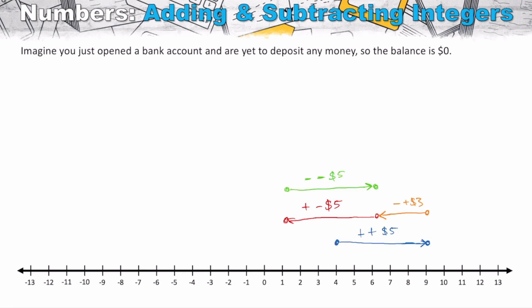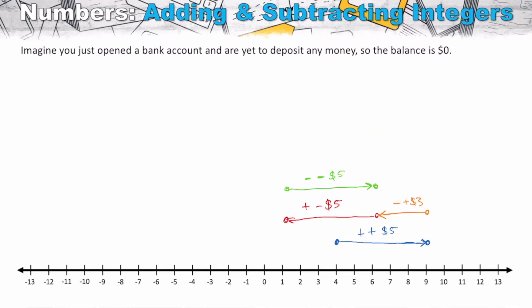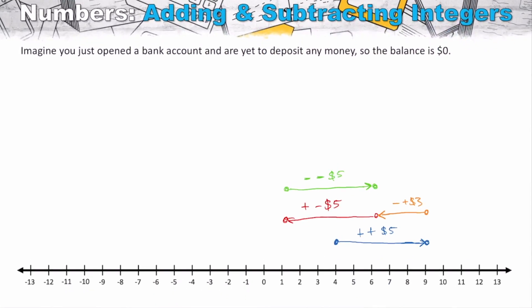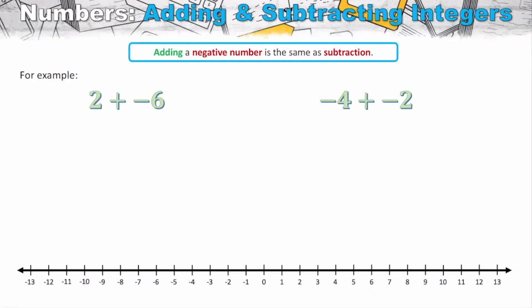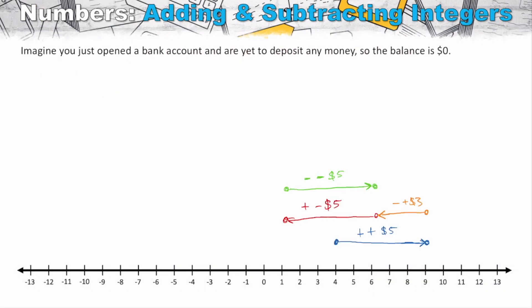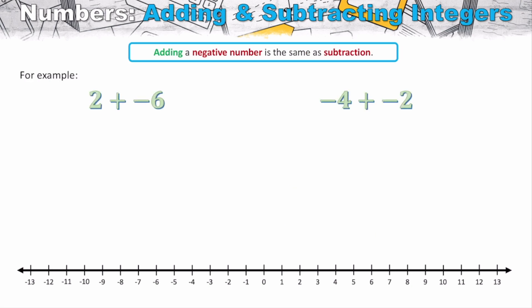These are the rules we need to remember when dealing with addition and subtraction. Let's take a look at a couple of problems. The first rule to note is: when we are adding a negative number it is the same as subtraction. Think about adding a negative number as adding fees to our bank account — it's going to cause our bank account to decrease.